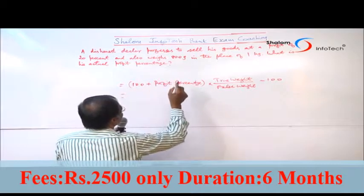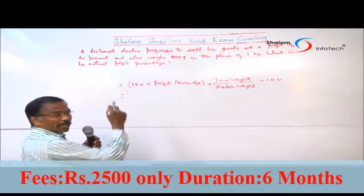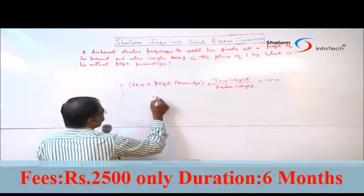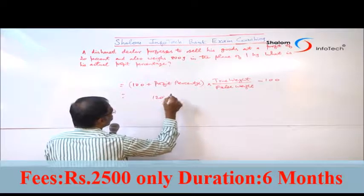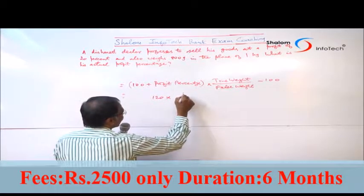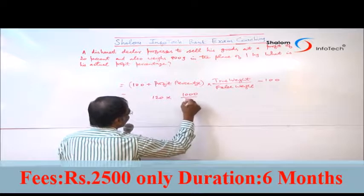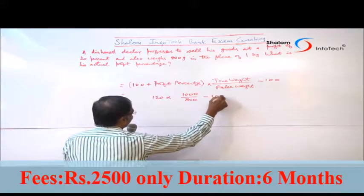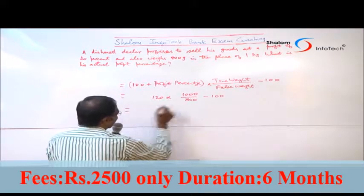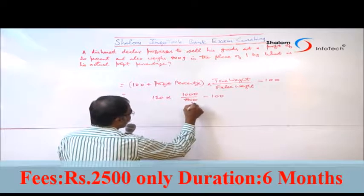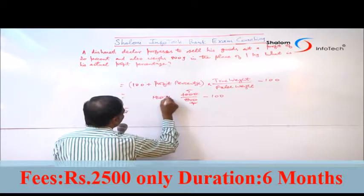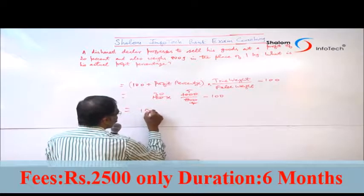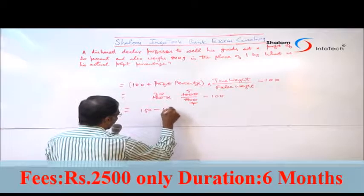If they have a profit percentage of 20%, this becomes 120. True weight is 100, false weight is 130. So: 120 into 100, divided by 130, minus 100. Cancelling the numbers gives 5, 30, and 130 minus 150.